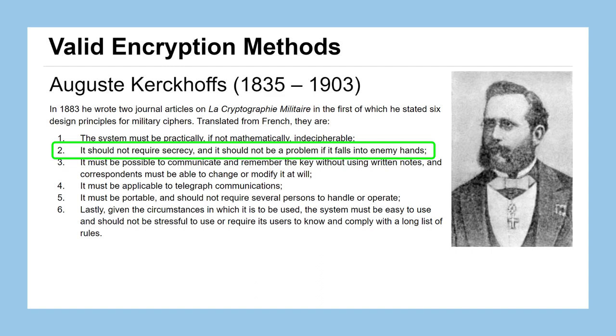You should be able to say, I use the Caesar cipher. And as long as they don't have the key, it shouldn't be a problem if that message were to fall into enemy hands. Now, we'll learn very early on in this course that the Caesar cipher is not a valid encryption method according to Auguste Kerckhoffs, because if you know it was encrypted with the Caesar cipher, it is not too hard to figure out what that plaintext message was, because there's only a very small number of keys that you could try.